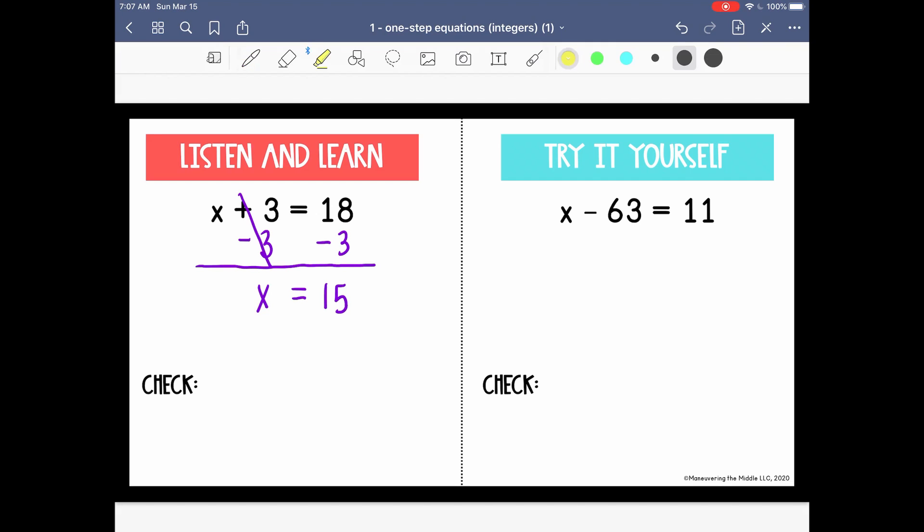I can also check my work by taking my value of x and substituting it back into the original equation. So that would look like 15 + 3 = 18. I can add 15 and 3 to get 18, and I know that's a true statement. And remember, that's what we said the goal was. Go ahead and pause the video and try the next one on your own.